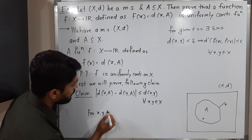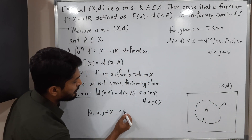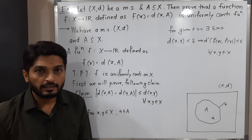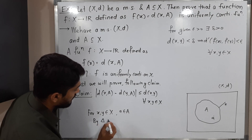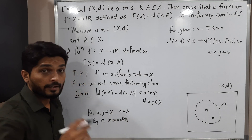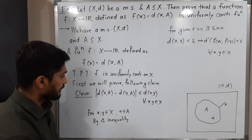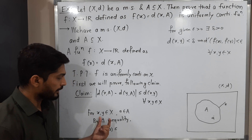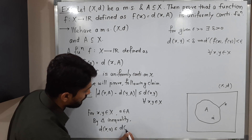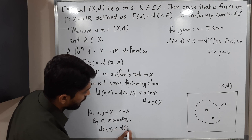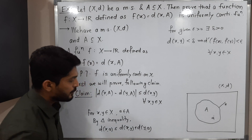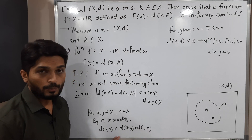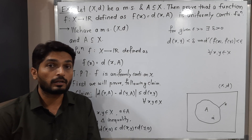I am taking any two points x, y from metric space X — x and y can be anywhere. We take one point a from capital A. By the triangle inequality, which is the fourth property of a metric space, we can write: d(x,a) ≤ d(x,y) + d(y,a). I have introduced point y between x and a to get this inequality.